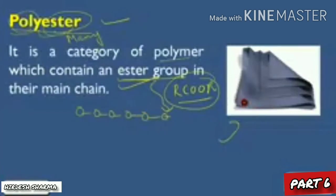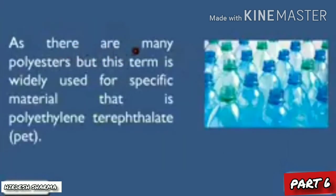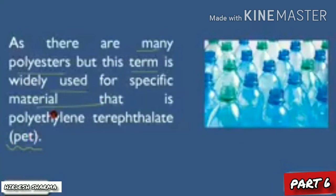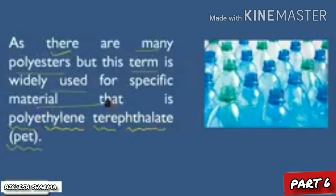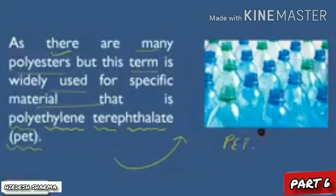As you can see in the figure, polyester is used as a clothing material. There are many polyesters, but this term is widely used for a specific material — PET, which means polyethylene terephthalate. Polyethylene terephthalate is used in making the PET bottles which you commonly use for keeping cold drinks or water. These PET bottles are made out of polyethylene terephthalate, and it is a polyester.